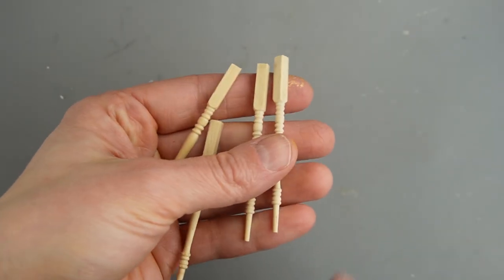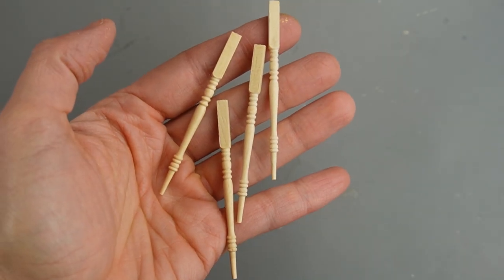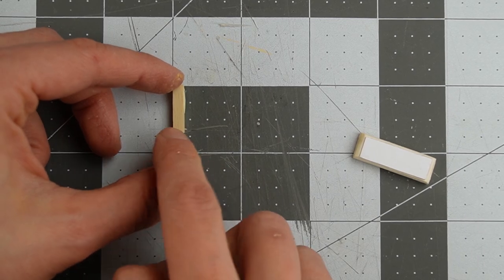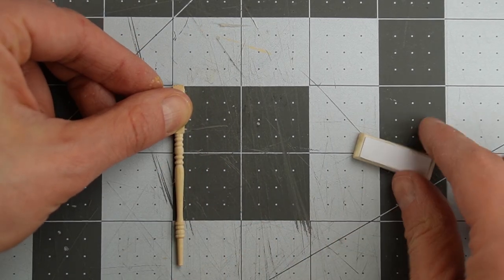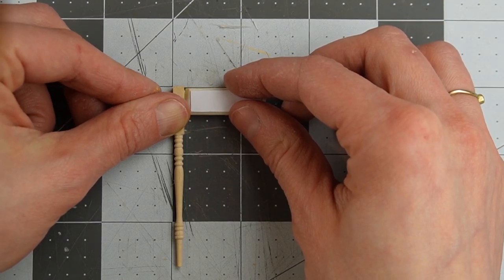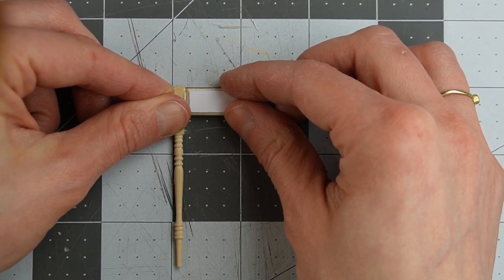I'm using stair balusters as the legs because they're really cheap and I love how they look. I'm using the lines on my cutting mat as a guide for assembling the table. I lined up the baluster in this 90 degree corner and I'm adding the drawer leaving a really small gap at the top.